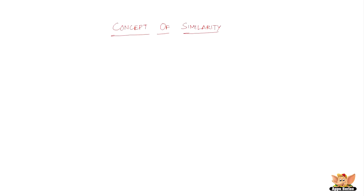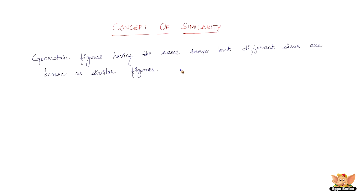In this video let us learn the concept of similarity. This is one of the most important and basic concepts as far as geometry, and even math, is concerned. What is it about something being similar? Geometric figures having the same shape but different sizes are known as similar figures — same shape but different sizes.